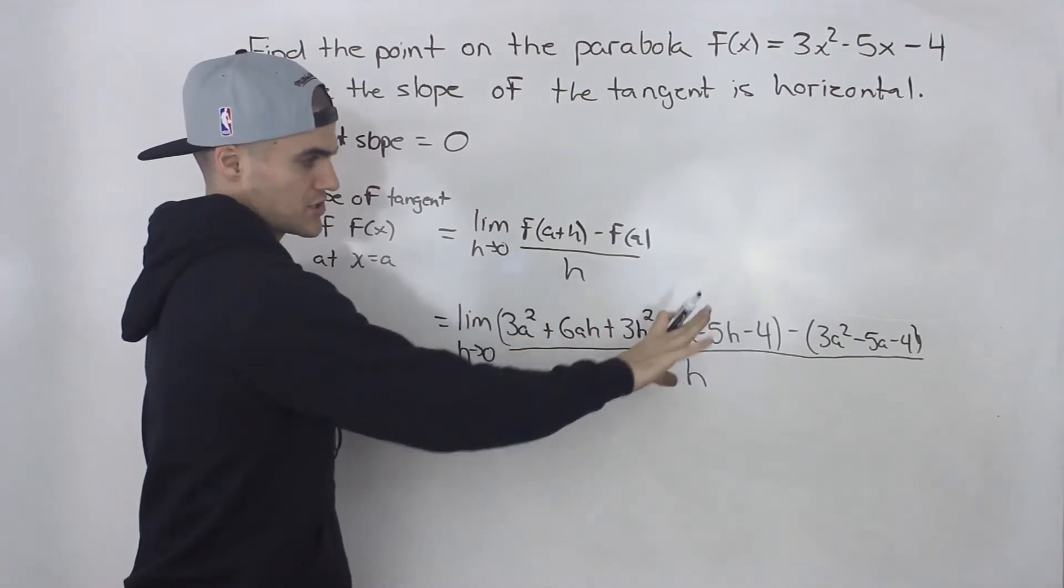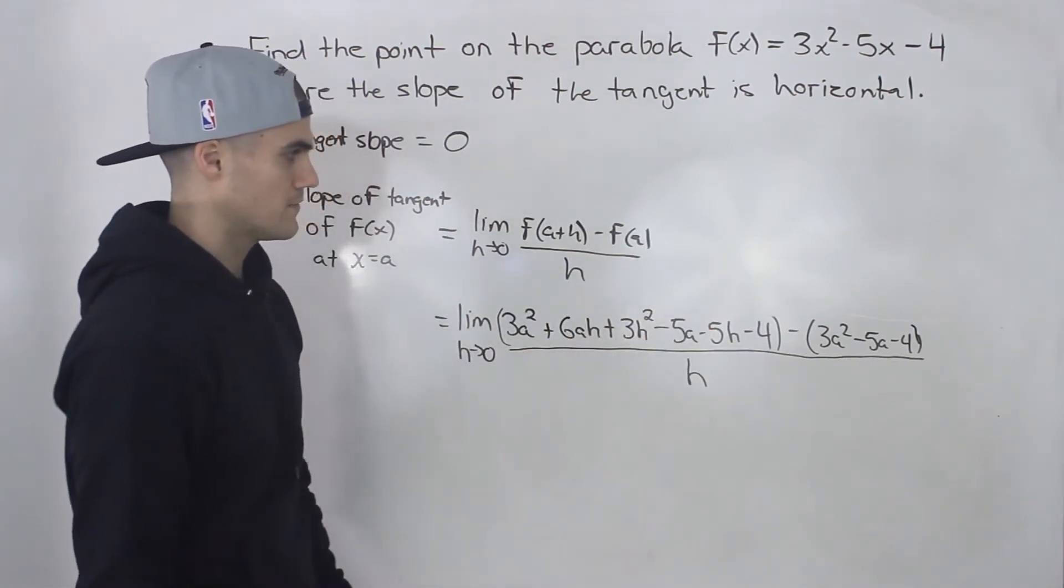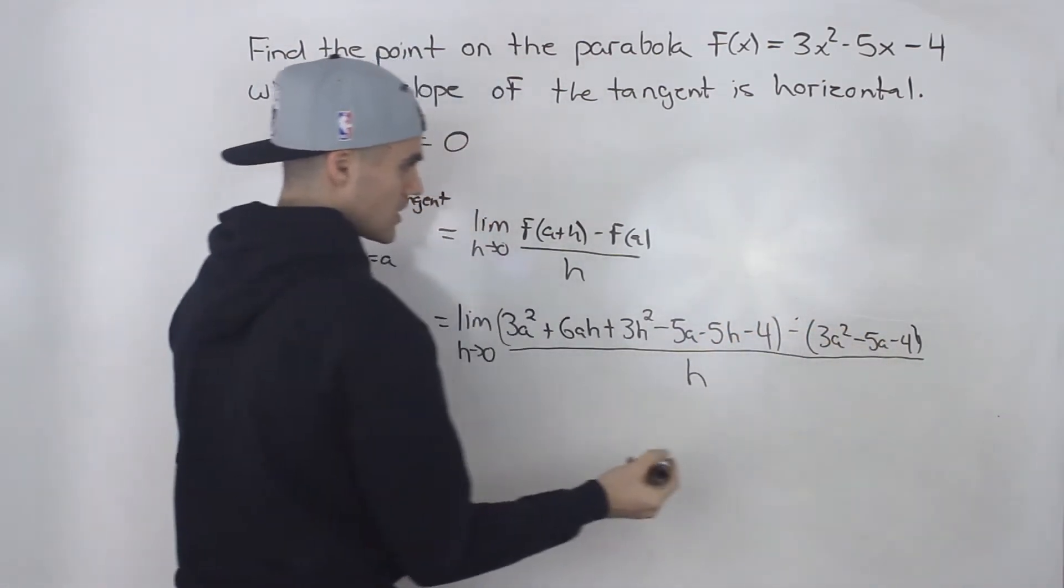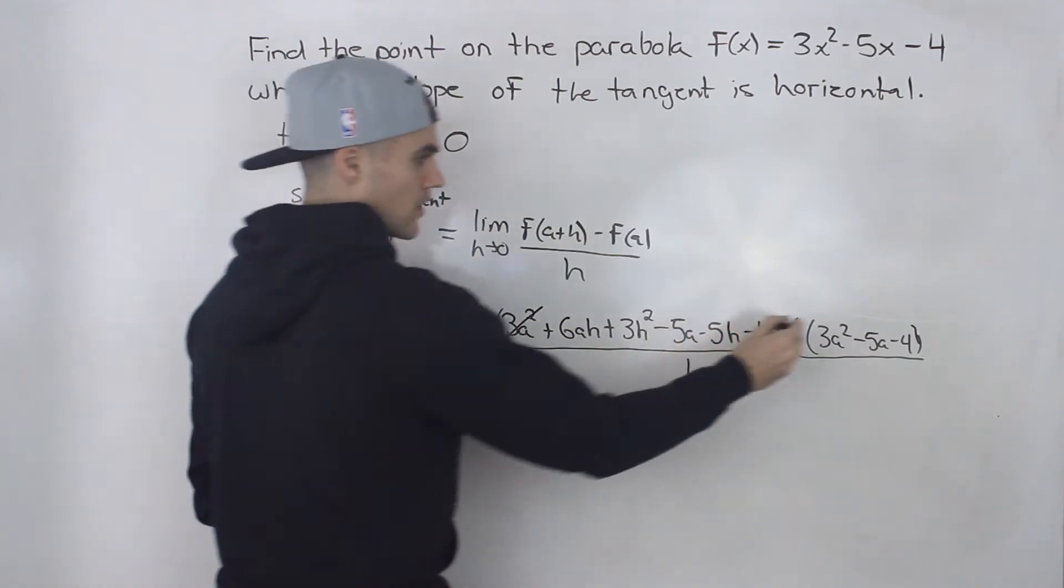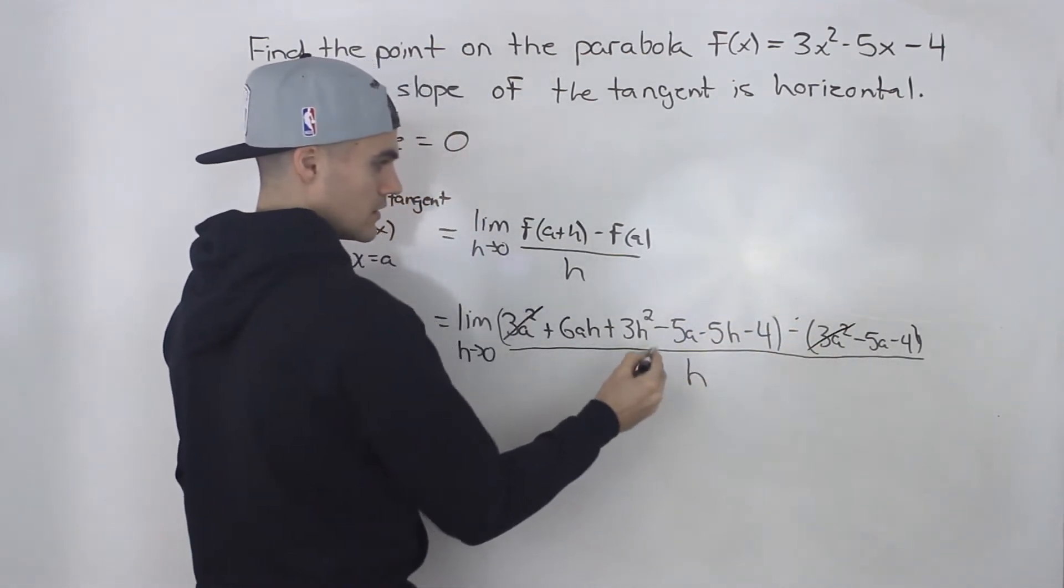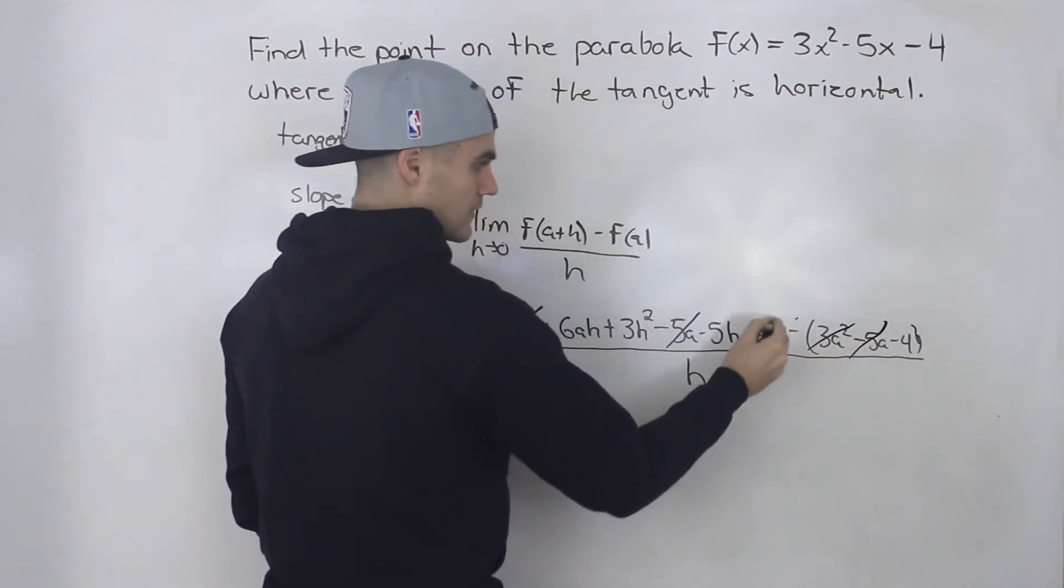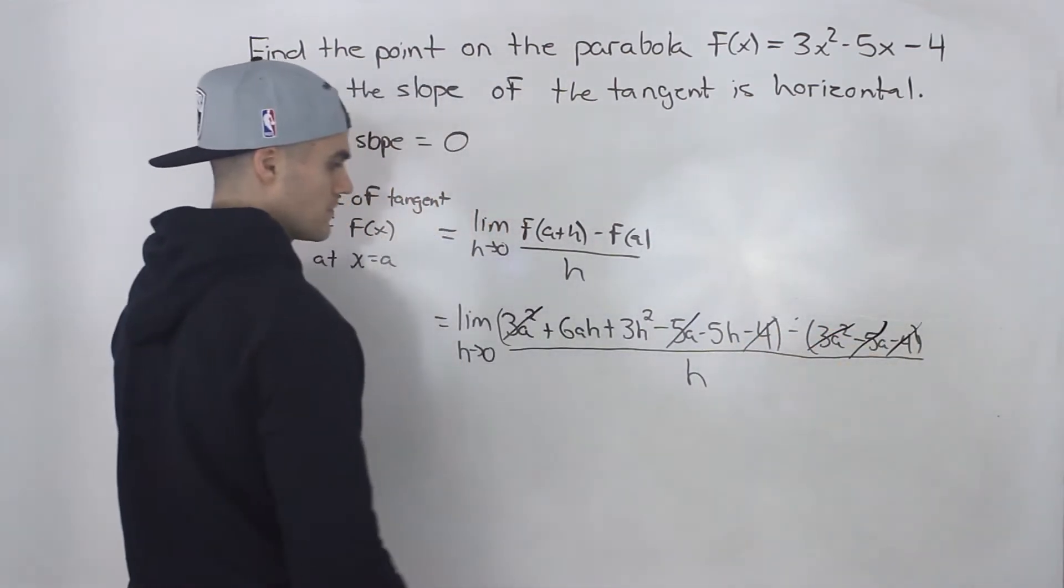you end up getting this huge expression in the numerator. So then when you distribute this negative inside this bracket, all these signs would change. And notice that the 3a² would cancel out. -5a + 5a would cancel out. And then -4 + 4 would cancel out as well.